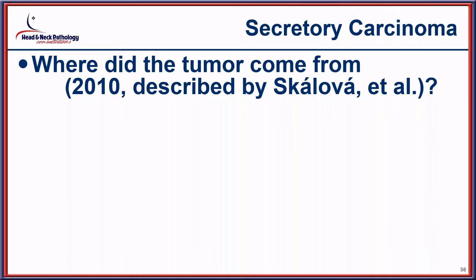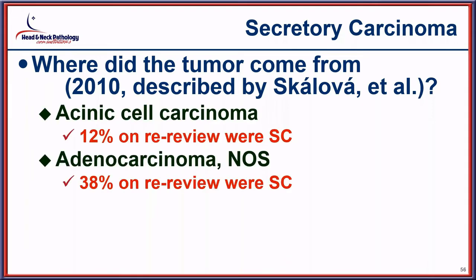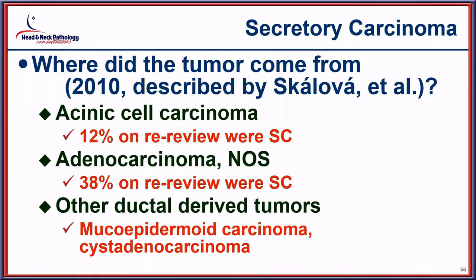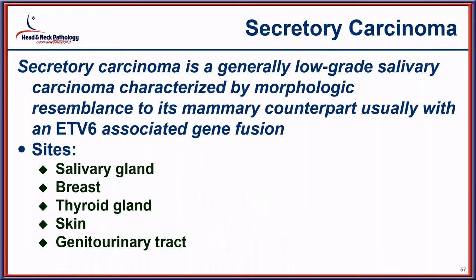When you think about new tumor diagnoses, they have always been around — we just haven't called them that. Secretory carcinoma previously fell under acinic cell carcinoma, adenocarcinoma NOS, and other ductal-derived tumors. It is a low-grade salivary gland tumor characterized by its resemblance to its mammary counterpart and an ETV6-associated gene fusion. It has been identified in salivary gland, breast, thyroid, skin, and genitourinary system, and salivary gland actually accounts for more tumor frequency than breast.